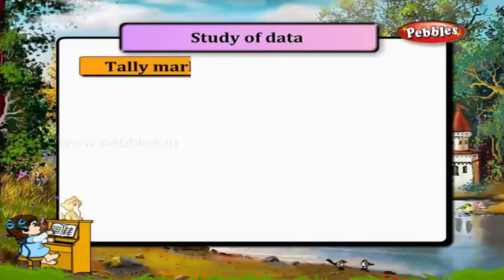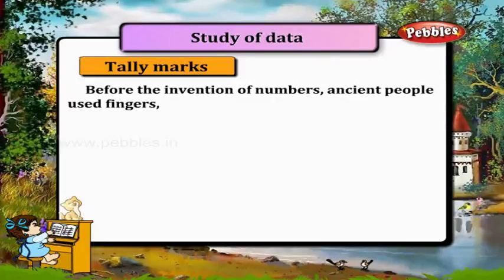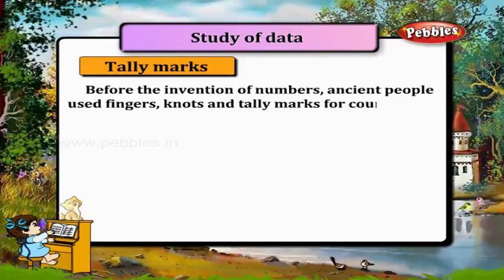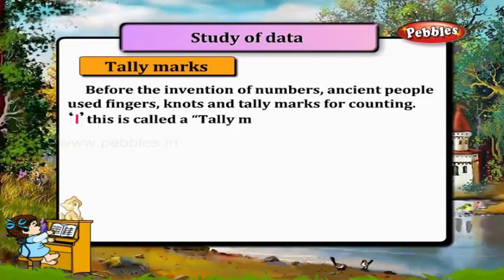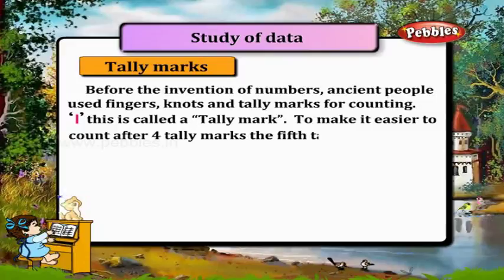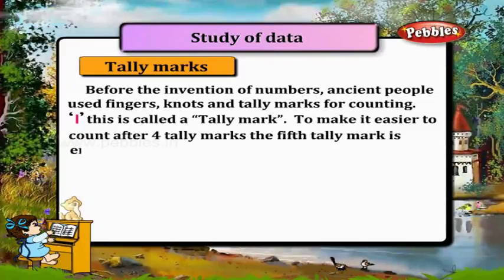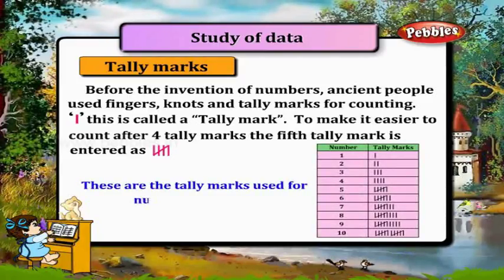Tally Marks. Before the invention of numbers, ancient people used fingers, knots, and tally marks for counting. This is called a tally mark. To make it easier to count, after four tally marks, the fifth tally mark is entered as a cross line. These are the tally marks used for numbers 1 to 10.